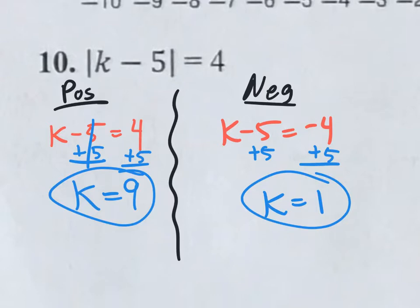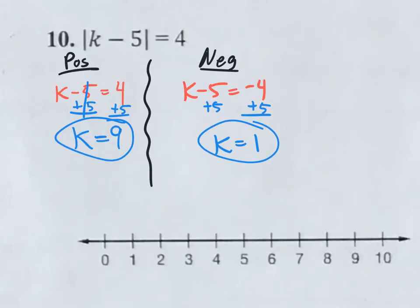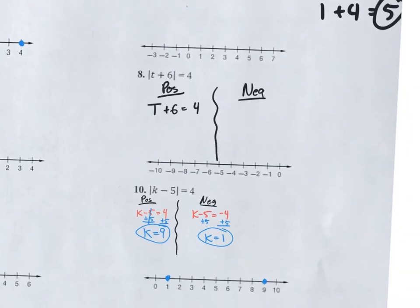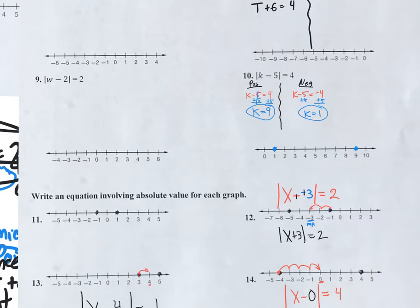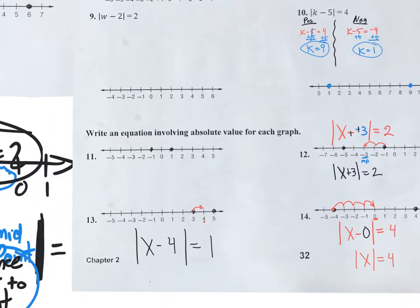If you have extra time, take nine and plug it in: nine take away five is four, the absolute value of four equals four. Take one and plug it in: one take away five is negative four, the absolute value of negative four equals four. You can double-check any of these to make sure you have the correct answers. On the worksheet they want you to plot your answers — nine and one — and the midpoint five is in the middle.